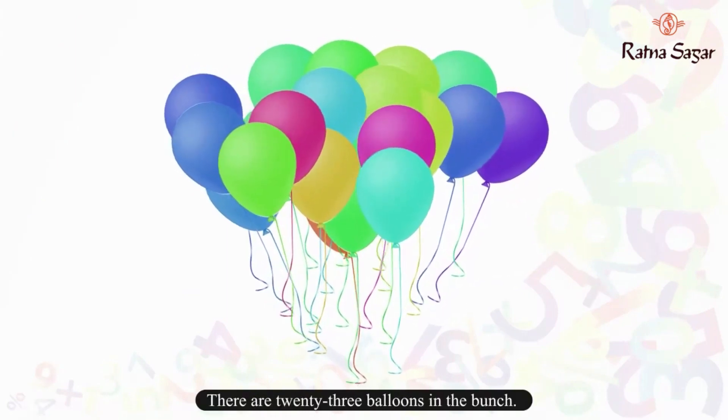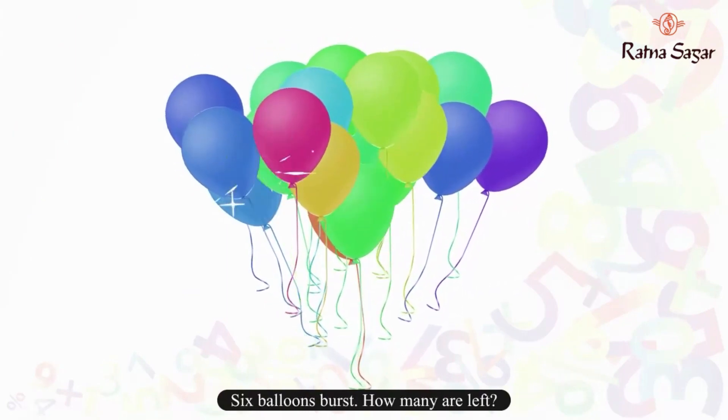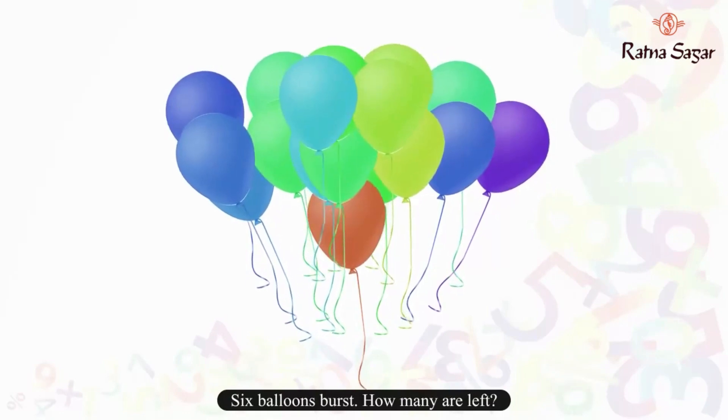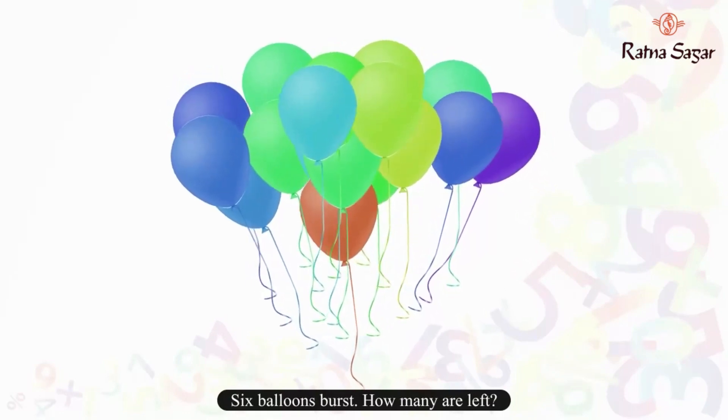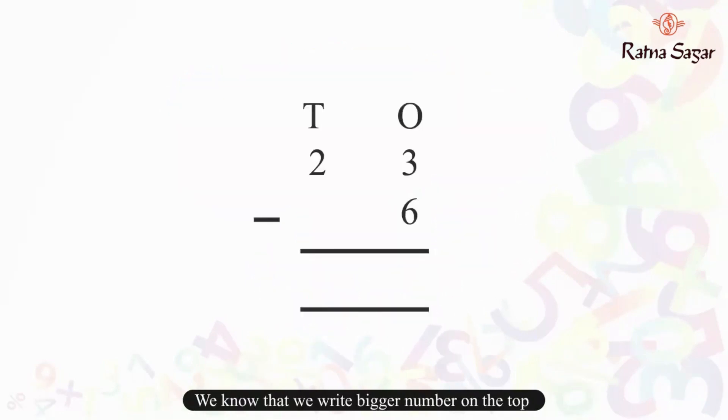There are 23 balloons in the bunch. 6 balloons burst. How many are left? We know that we write the bigger number on the top and smaller number on the bottom. So, to find the number of balloons left, we need to subtract 6 from 23.